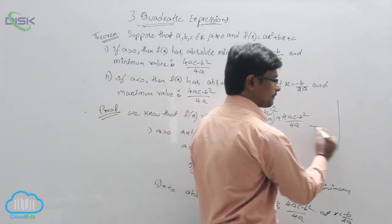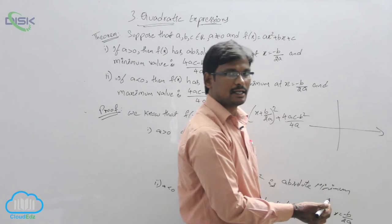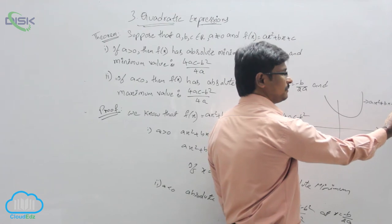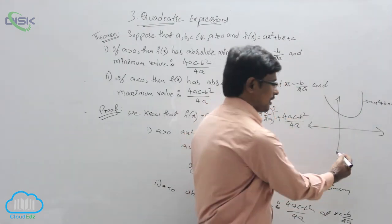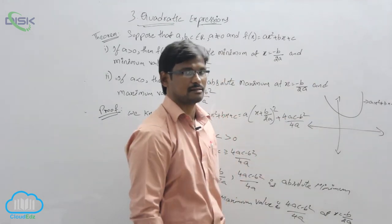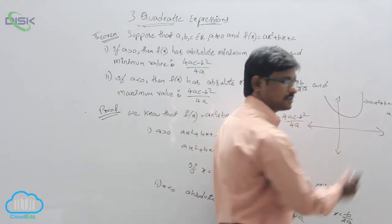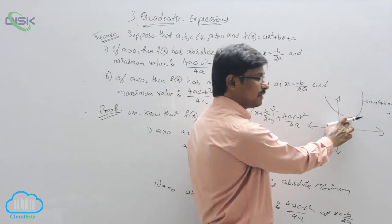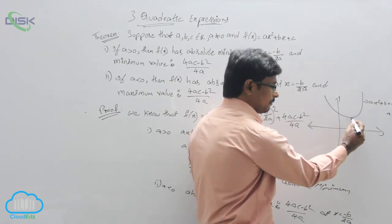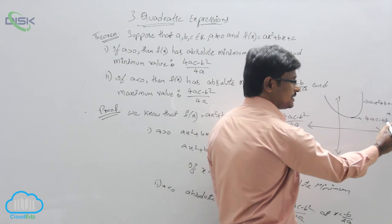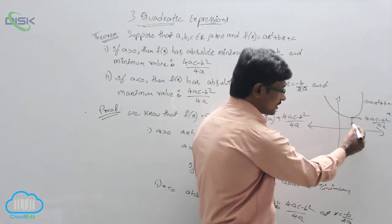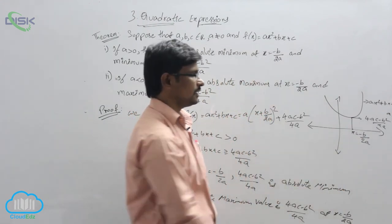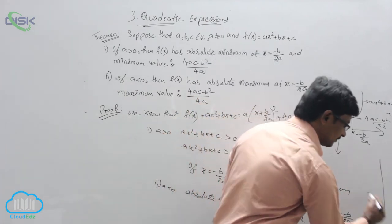If we draw the graph: when a > 0, the graph of ax² + bx + c opens upward, lying towards the positive y-axis. The minimum value is (4ac - b²)/4a, at the corresponding point x = -b/2a.